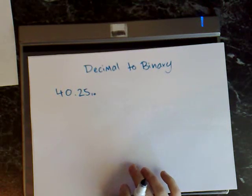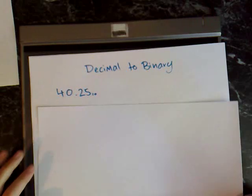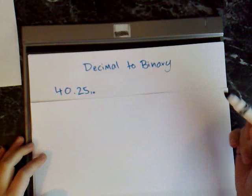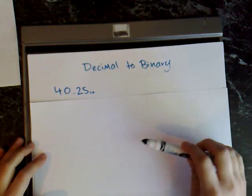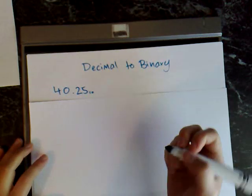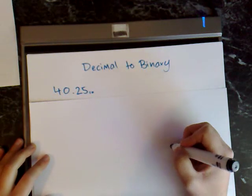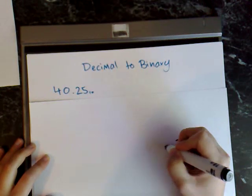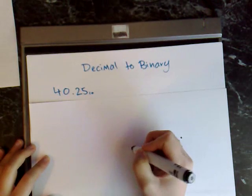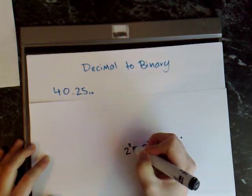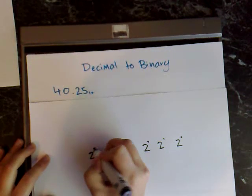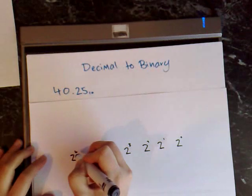For the last example we're going from decimal to binary. It's the exact same process, except this time we use powers of 2 because binary is base 2. So we start with 2 to the power of 0, 2 to the power of 1, 2 to the power of 2, 2 to the power of 3, 2 to the power of 4, 2 to the power of 5, and 2 to the power of 6.